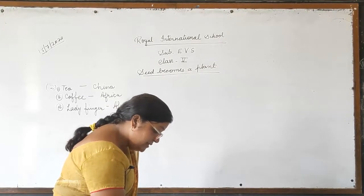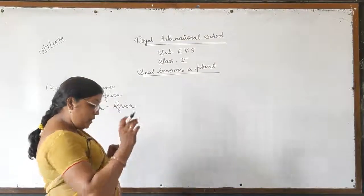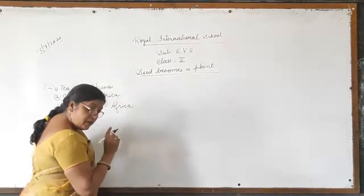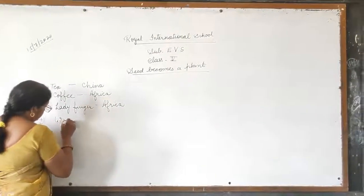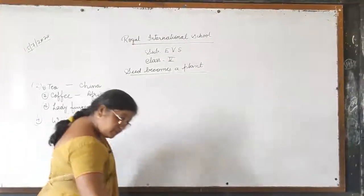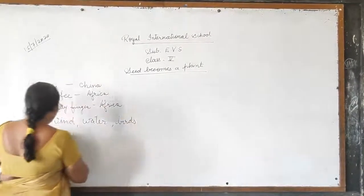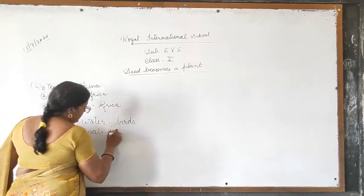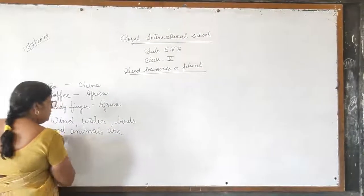Come to the fourth question: name any four agents of dispersal. For answer number four, you will write: wind, water, birds, and animals. Wind, water, birds, and animals are the four agents of dispersal.